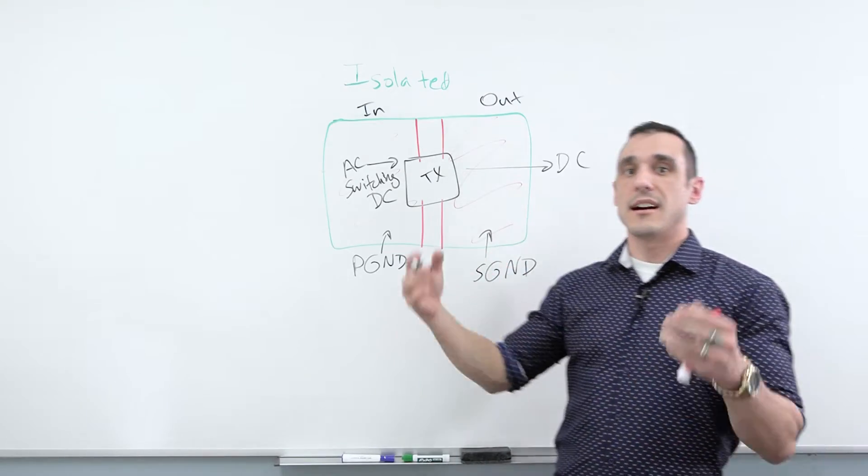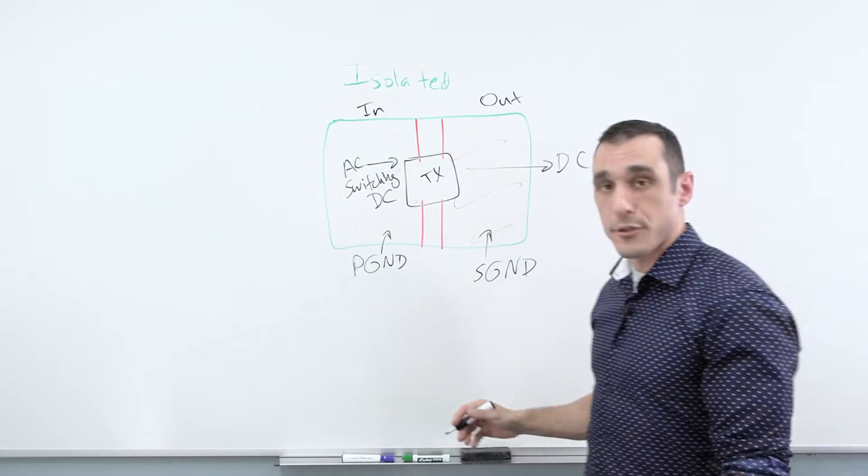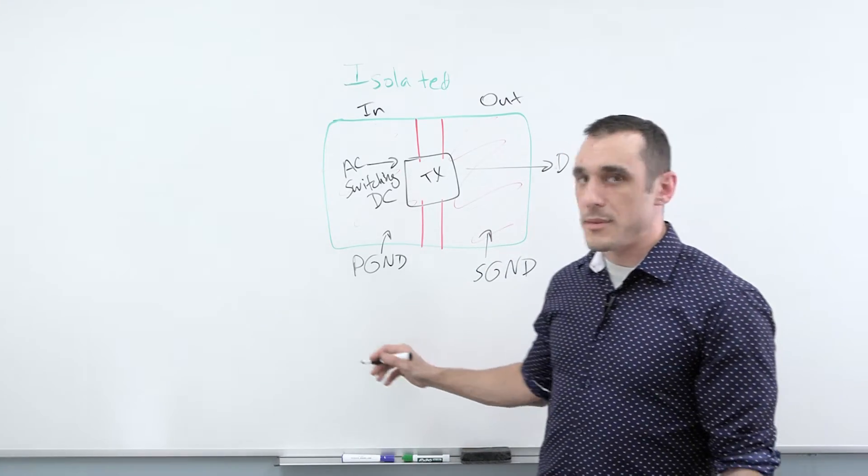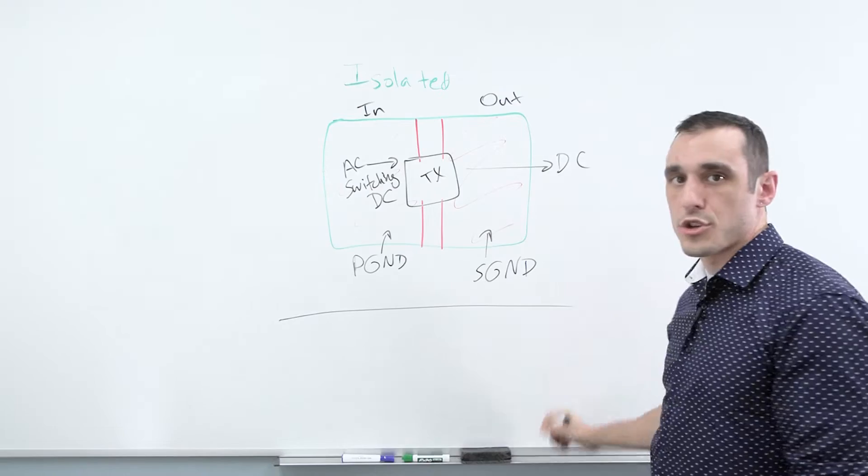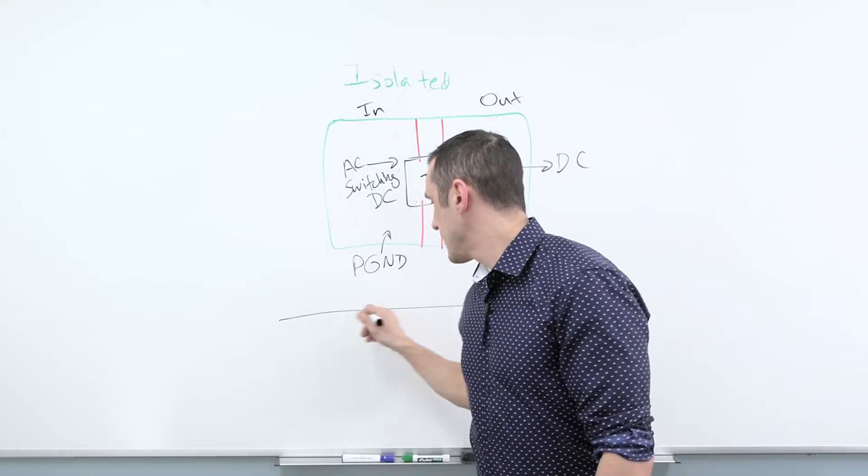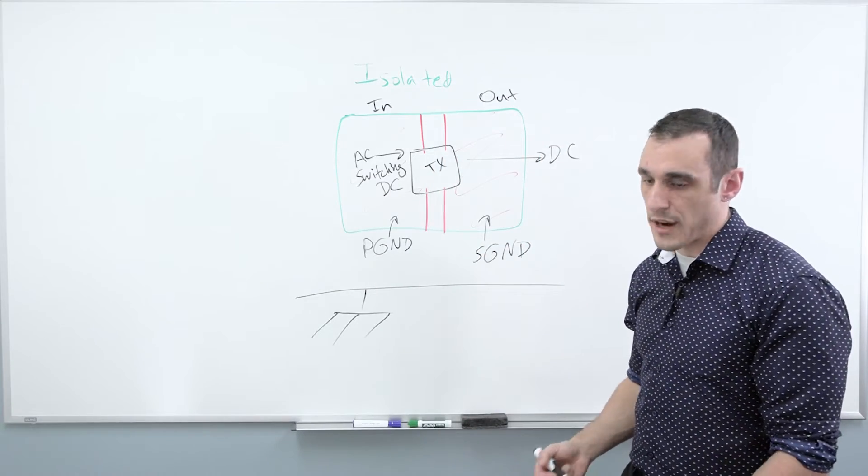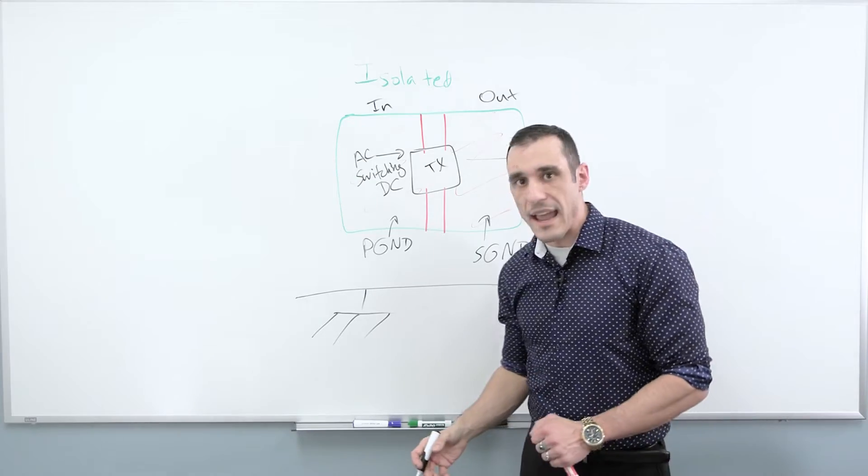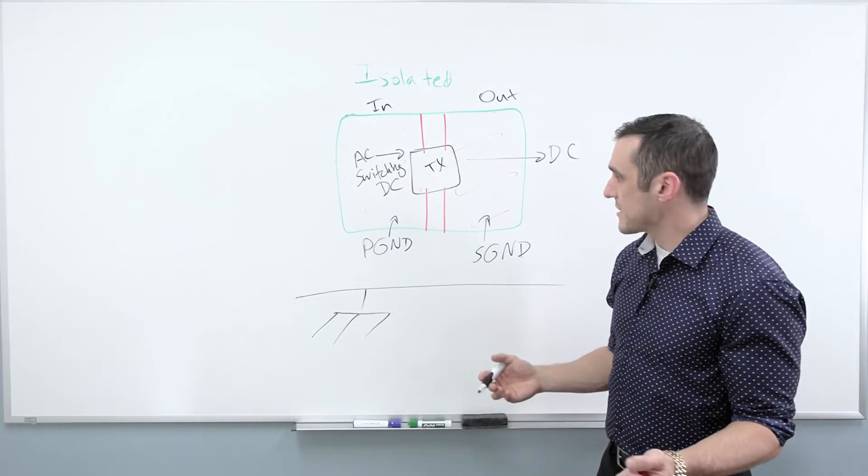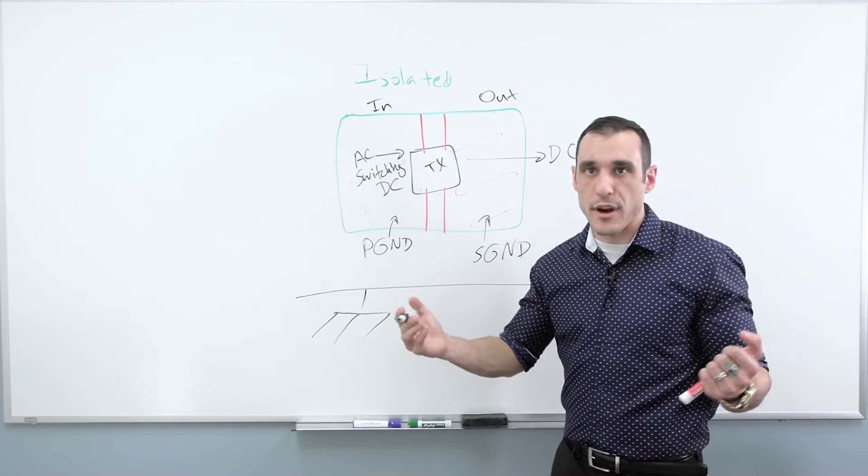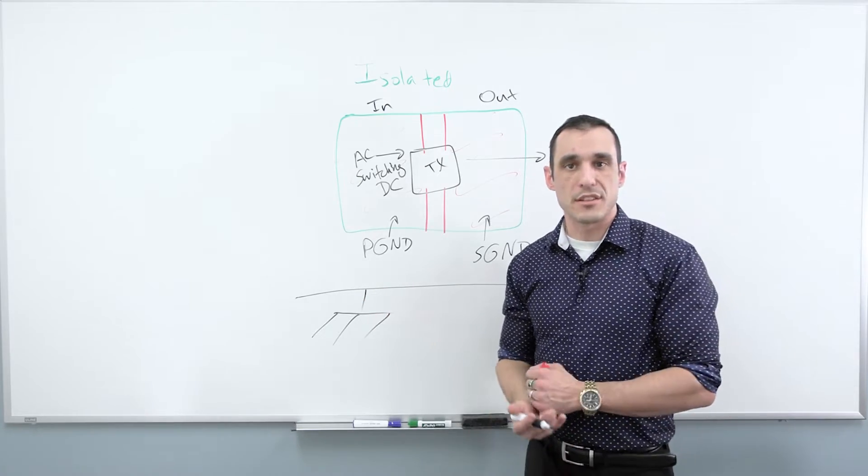And then there may be another ground connection, a third ground connection, and that would be your enclosure, which is then your frame ground or your chassis ground. And so we now have to ask, how do we link all these grounds together? And why do we even want to do that?